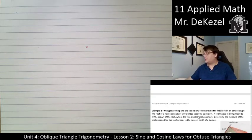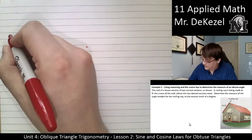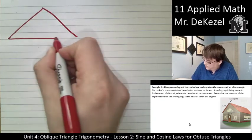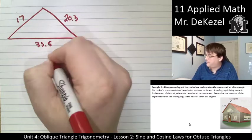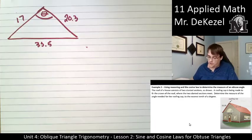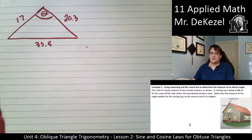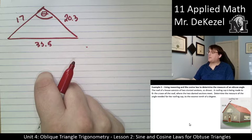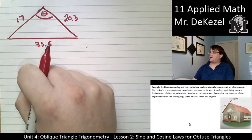Let's go to another problem. Okay, we're going to use the cosine law this time. So the roof of a house consists of two slanted sections as shown. Let's draw this kind of more face on to make it easier for us. So we have a roof here with 17, 20.3, and 33.5 feet. And we have this roofing cap here. That is this part. And it is at a particular angle. And what we want to know is what that angle is. I'm going to bet money that because we're talking about obtuse angles, and these are definitely not obtuse, that that is going to be greater than 90 degrees. A roofing cap is being made to fit the crown of the roof, where the two slanted sections meet. Determine the measure of the angle needed for the roofing cap.